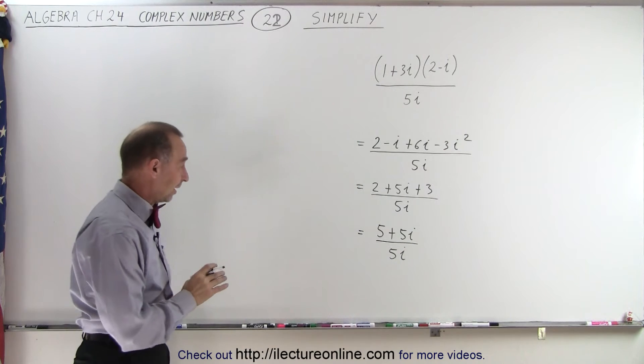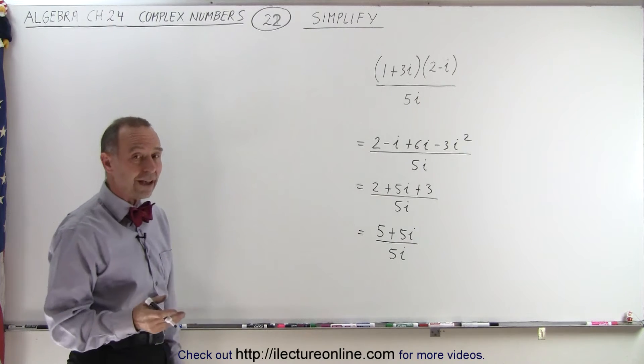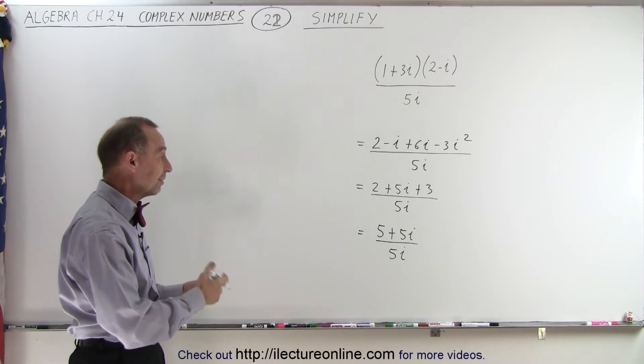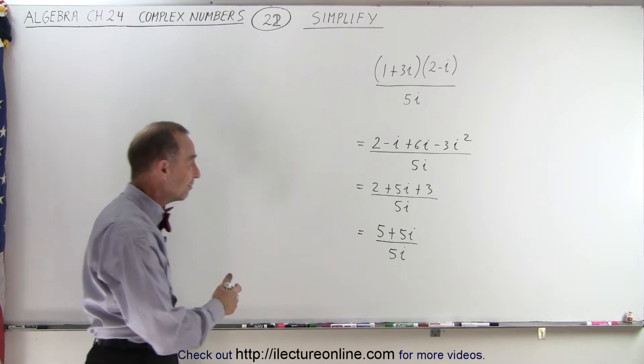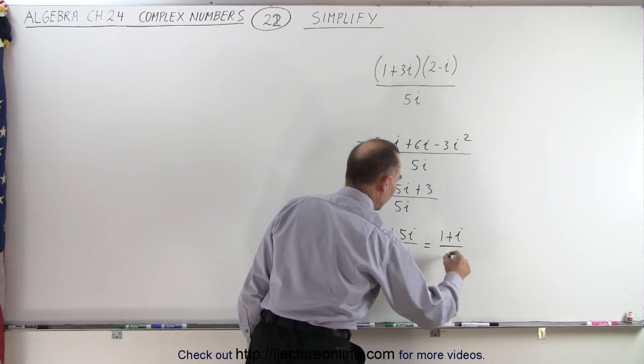Wow, that's kind of interesting. I didn't expect to see that, but notice that every term has a 5 in it, so we can simplify that by dividing the numerator and denominator by 5. So this can be written as 1 plus i over i.